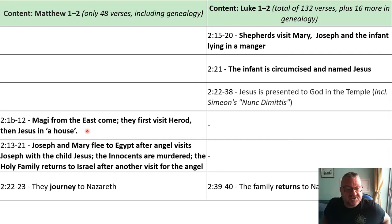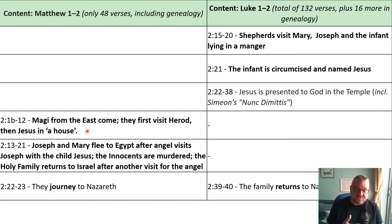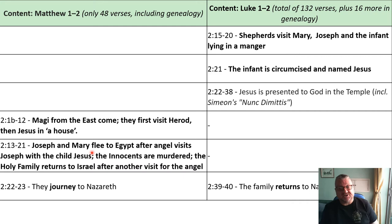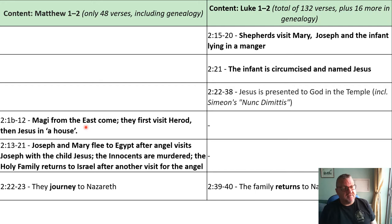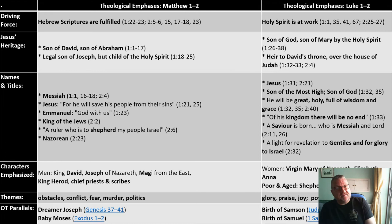Matthew doesn't mention Simeon, the Nunc Dimittis, the circumcision, or shepherds. Instead, the Magi from the east visit Herod and then Jesus in a house; Joseph and Mary flee to Egypt after an angel warns Joseph; Herod murders the innocents; and finally the holy family returns to Israel when it is safe, then journeys to Nazareth. Notably, no timescale is given for the Magi's visit — many theologians suggest it may have occurred a couple of years after the birth of Jesus.